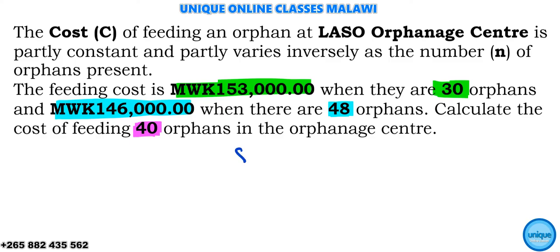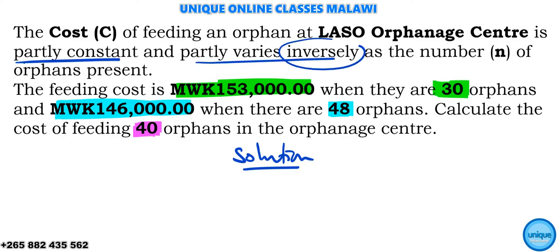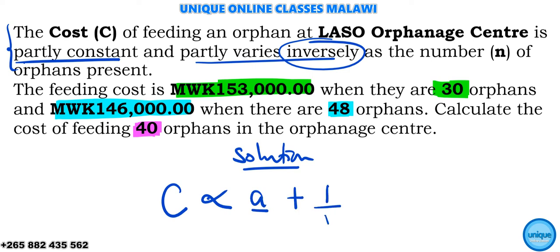In the solution, when dealing with partial variation, we should note that we have two constants. One part is constant and the other part varies inversely. So we are formulating an equation using the first part of the question. We have C as our cost, which is partly constant — part A — plus another part which varies inversely with the number of orphans present — part B.